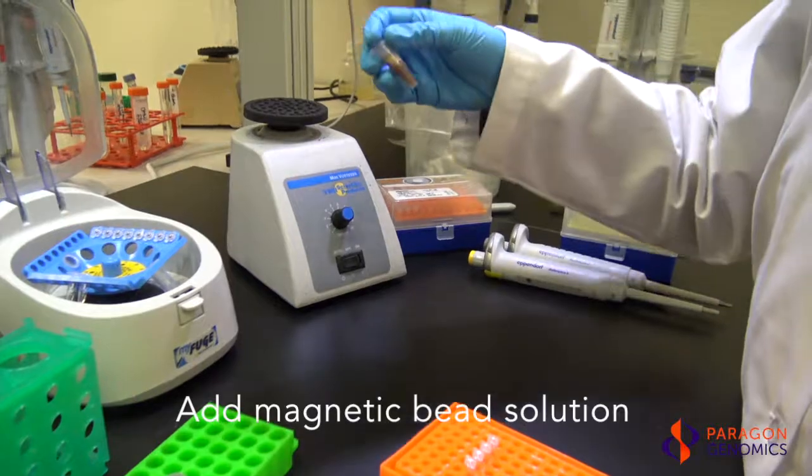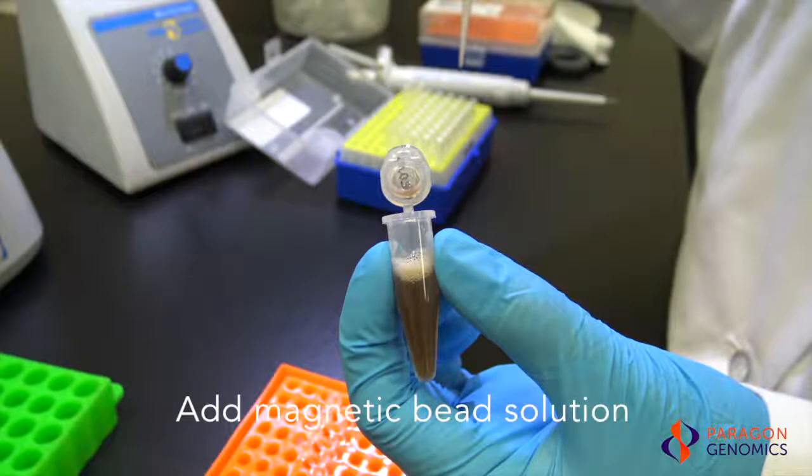First, add an appropriate volume of CleanMag magnetic bead solution to each sample. The volumetric ratio of beads to sample is 1.3 times for the first two purification steps and 1 times for the last purification step.